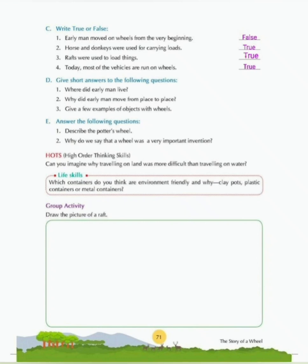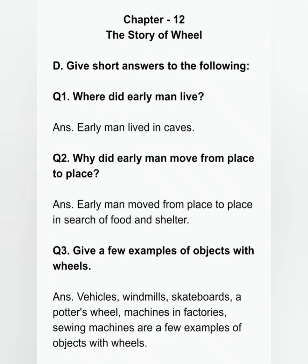Question D: Give short answers. Question 1: Where did early man live? Early man lived in caves in order to protect himself from wild animals. Question 2: Why did early man move from place to place? Early man moved from place to place in search of food and shelter. Question 3: Give a few examples of objects with wheels. Vehicles, windmills, skateboards, a potter's wheel, machines in factories, and sewing machines are a few examples.